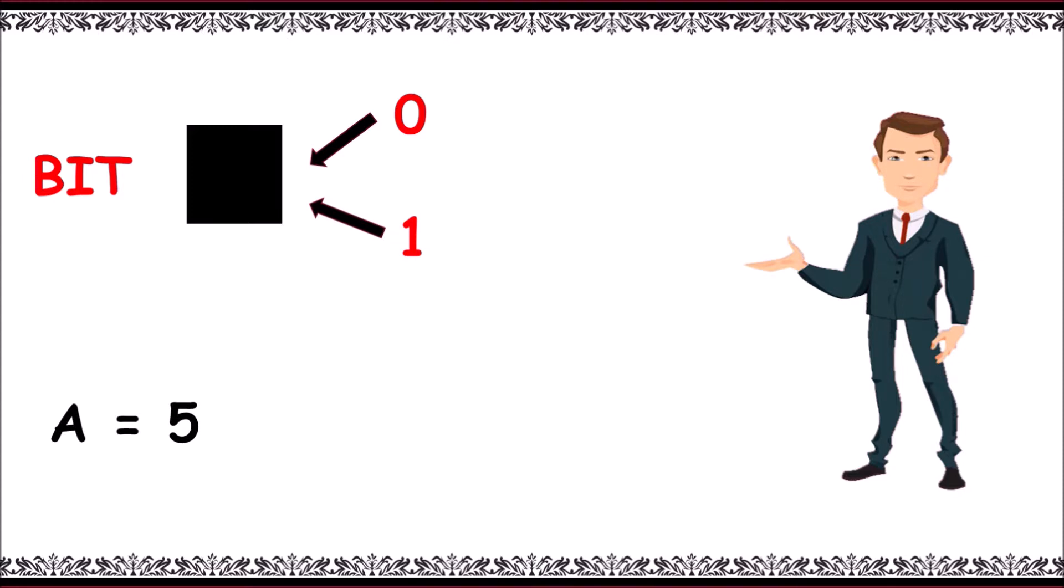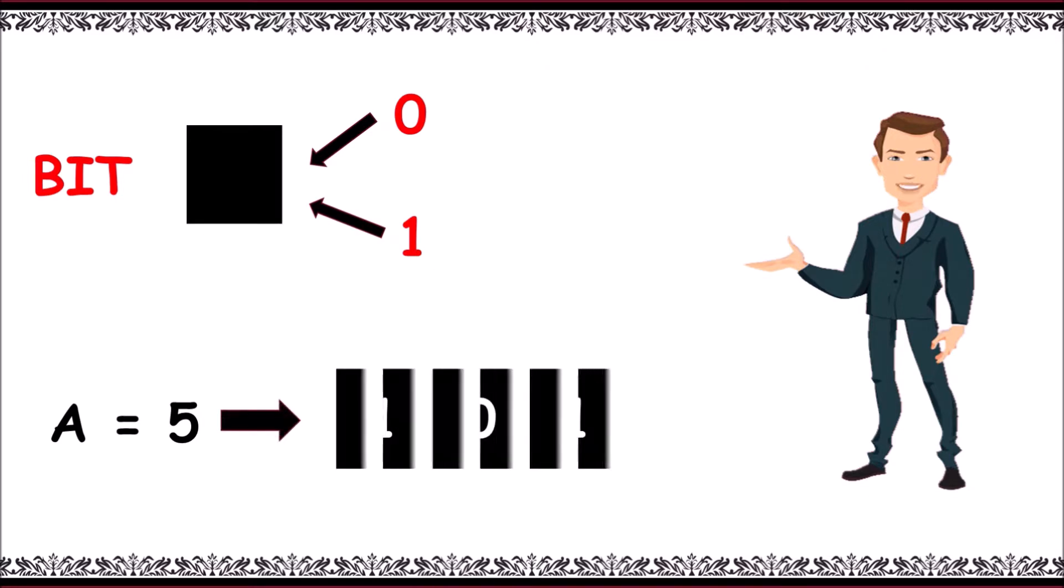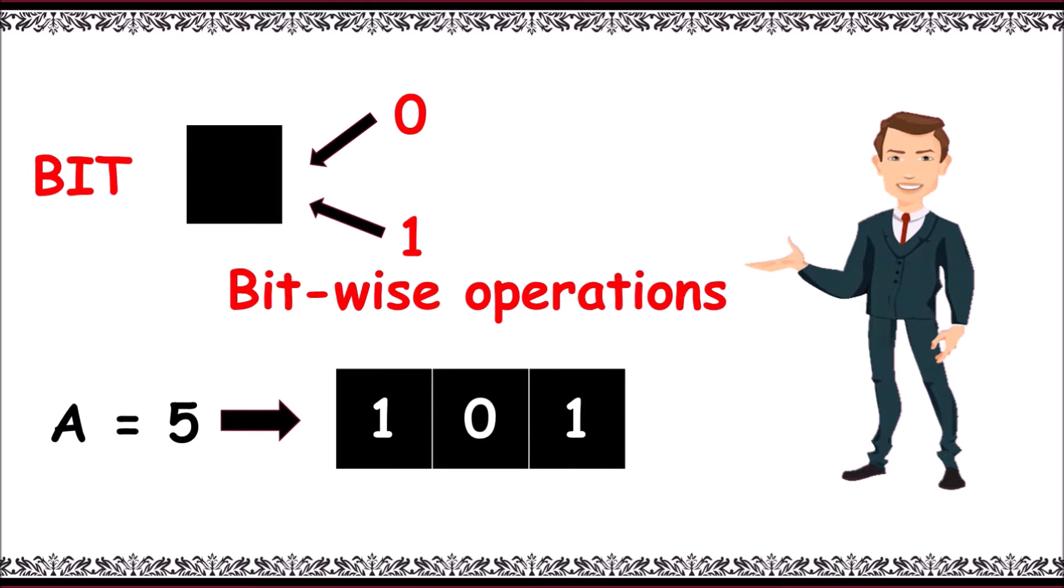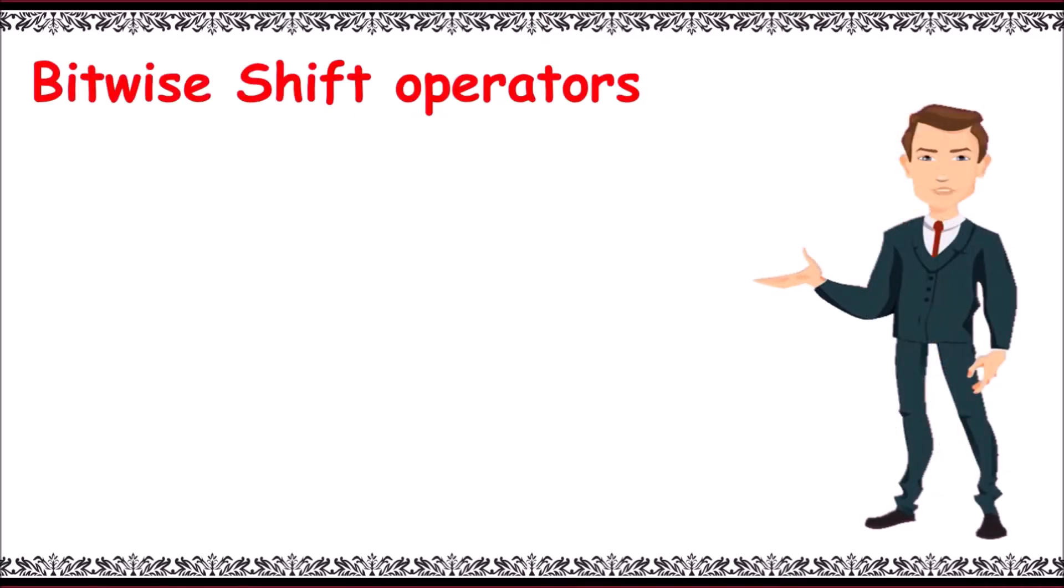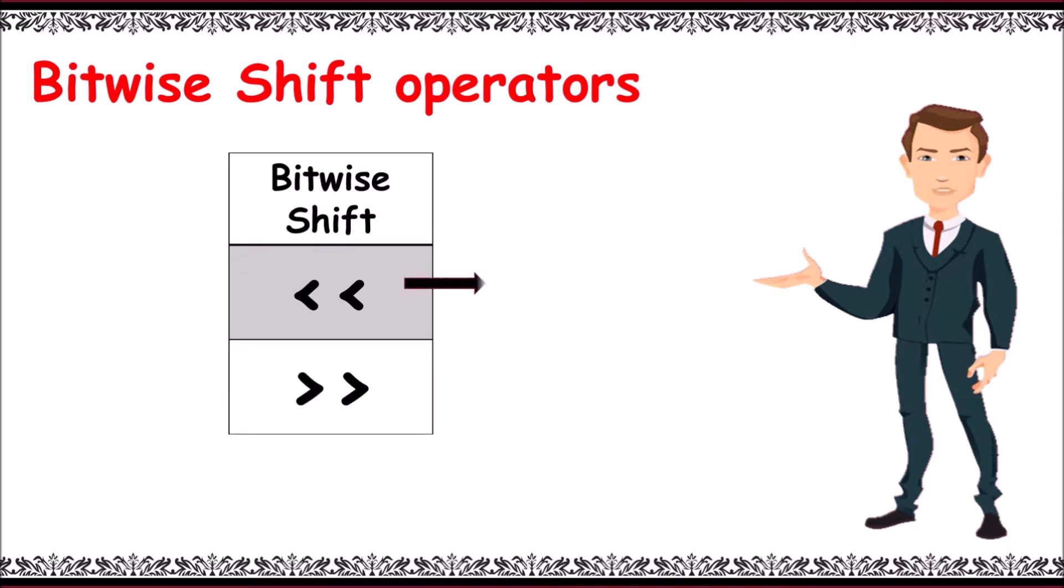We convert it into binary number, which is 1 0 1, and then we perform operations on individual bits. Bitwise shift operations are of two types: left shift with two less than symbols, and right shift with two greater than symbols.